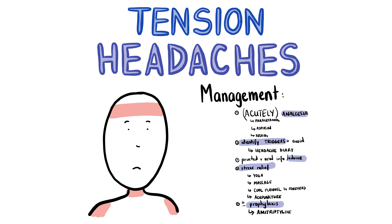Let's start by talking about tension headaches. Tension headaches are symmetrical headaches lasting between 30 minutes and 7 hours associated with stress. They come on gradually and classically feel like a band of pressure around the forehead. They can be associated with scalp, neck and shoulder tenderness.